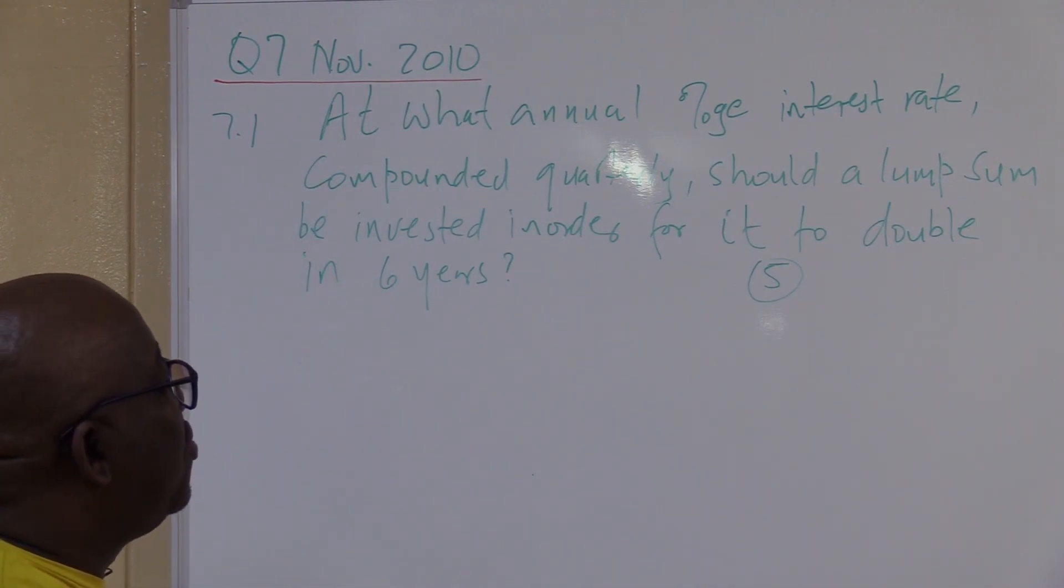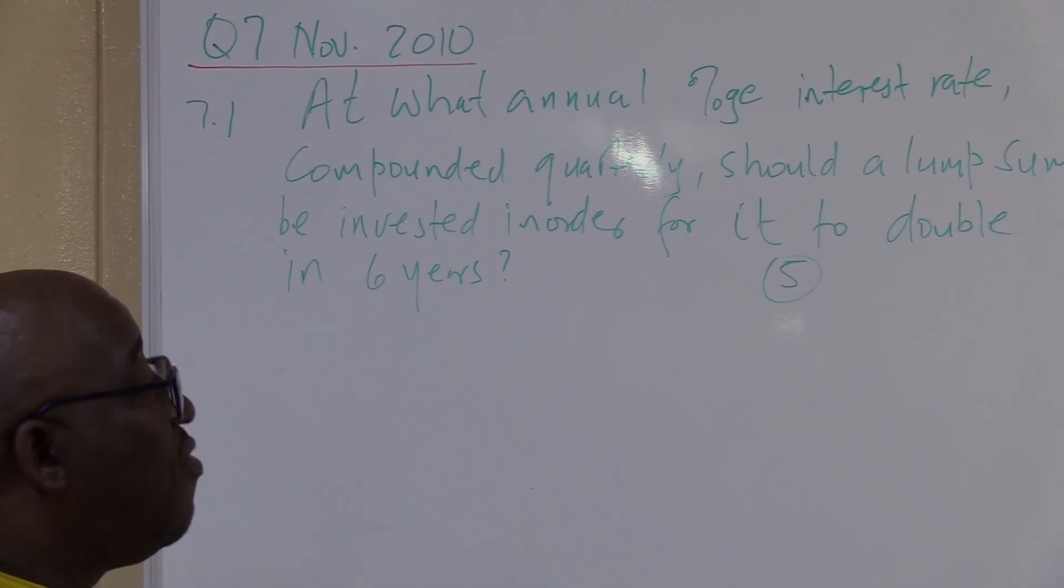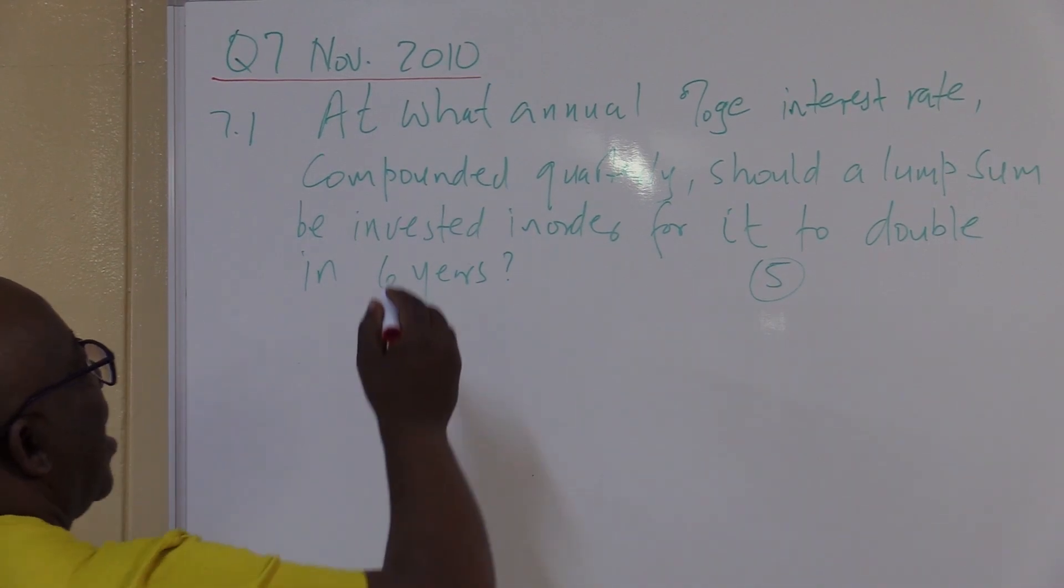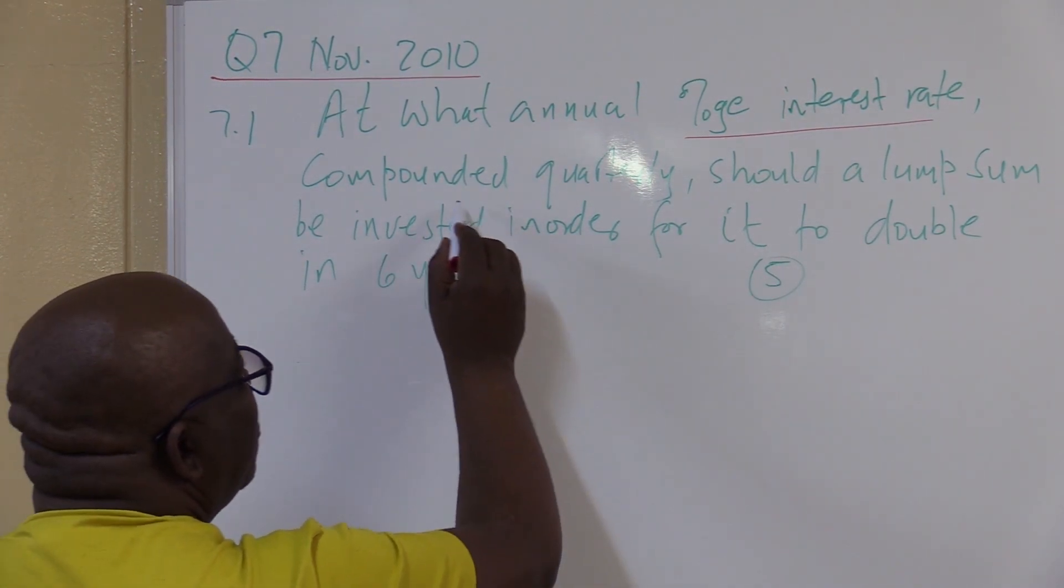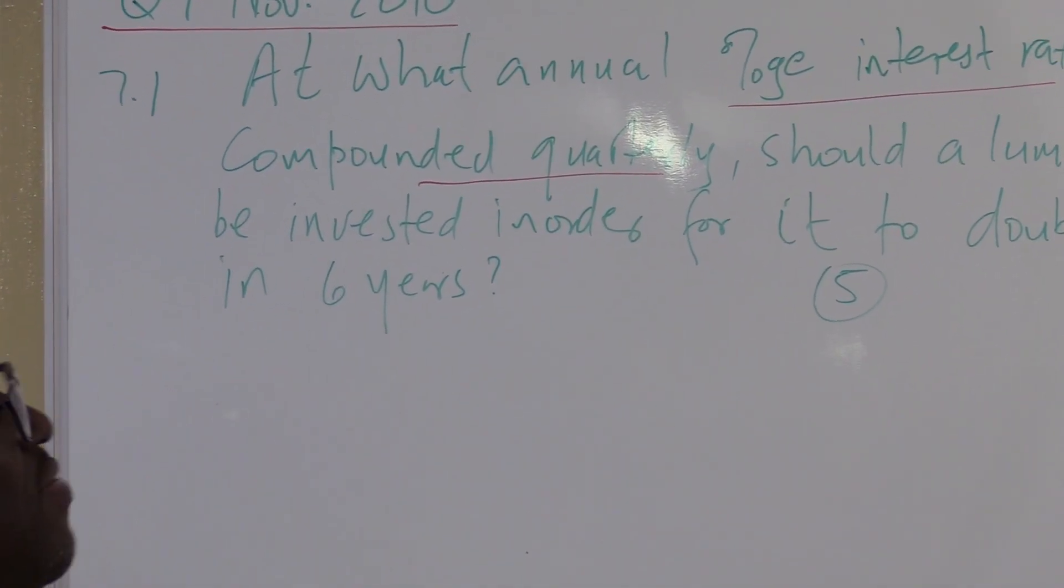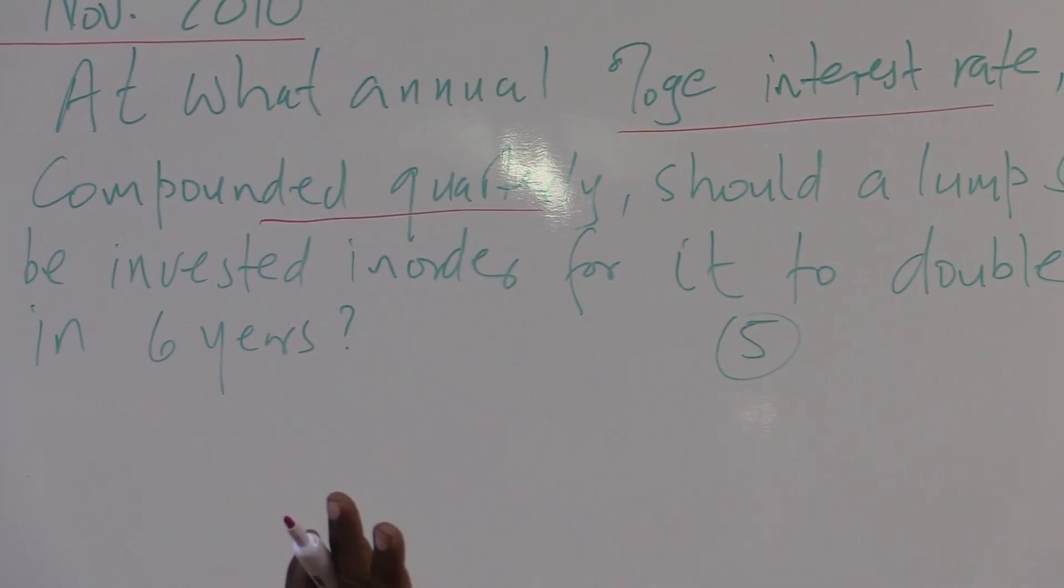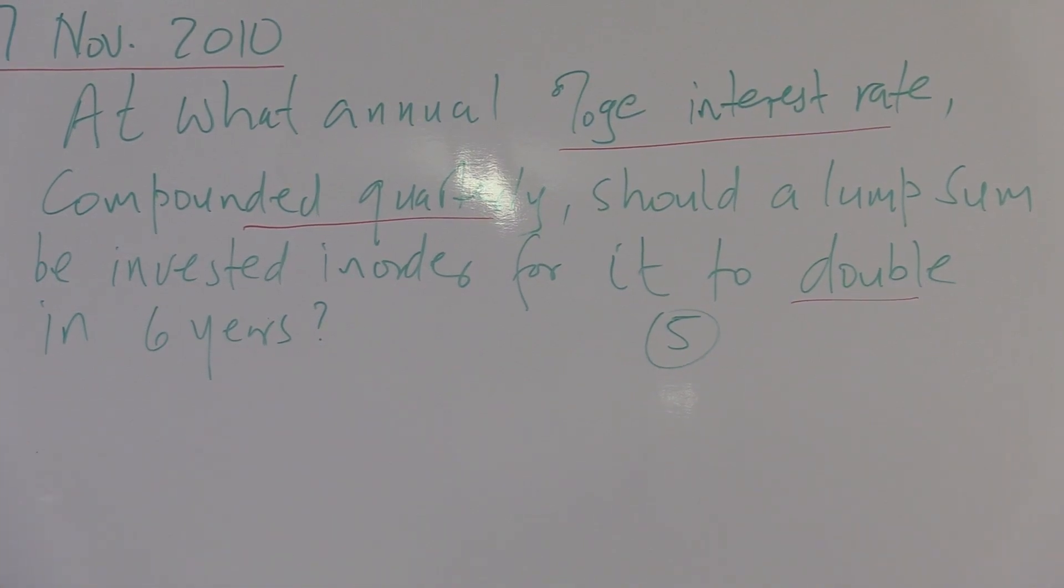At what annual percentage interest rate compounded quarterly - we're looking for i. Compounded quarterly becomes important. Remember that my n I multiply by four, my i I divide by four. That's what quarterly means. Should a lump sum be invested? Do I know that lump sum? No, we don't have the value of that lump sum. In order for it to double, we know that, but that lump sum will double when? In six years.